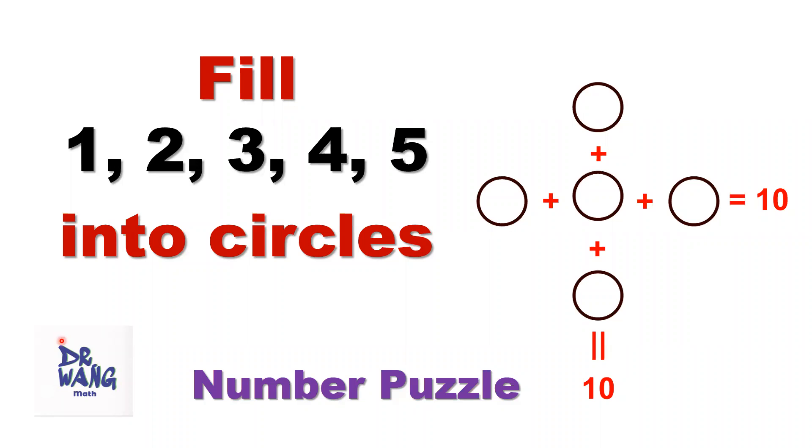Hello everyone, this is Dr. Wen. Can you solve this puzzle? Put five numbers into circles such that the horizontal sum equals 10, the vertical sum also equals 10.